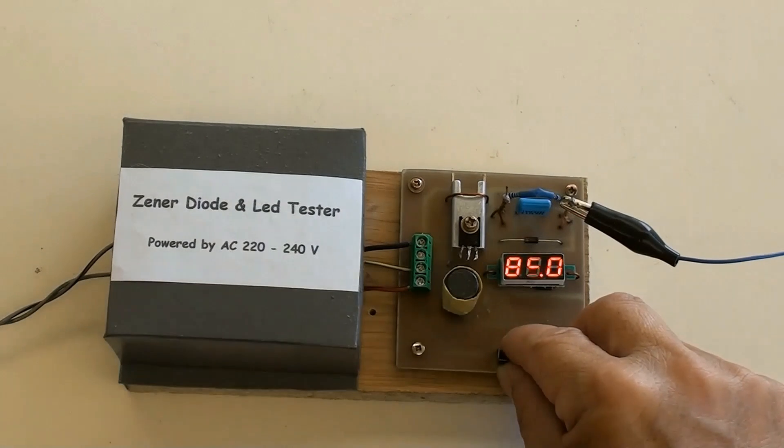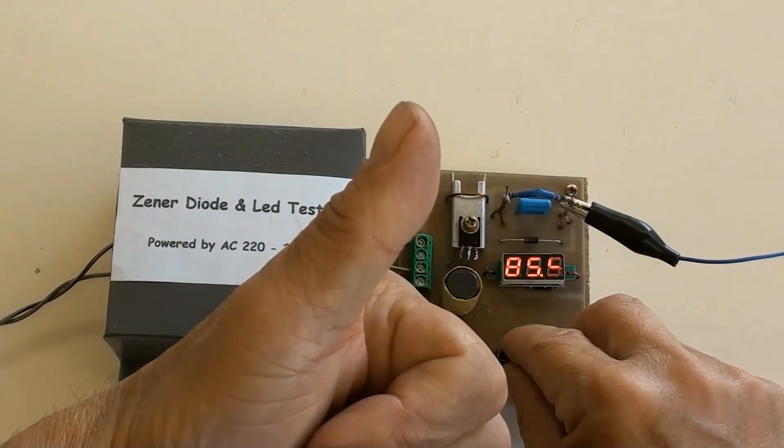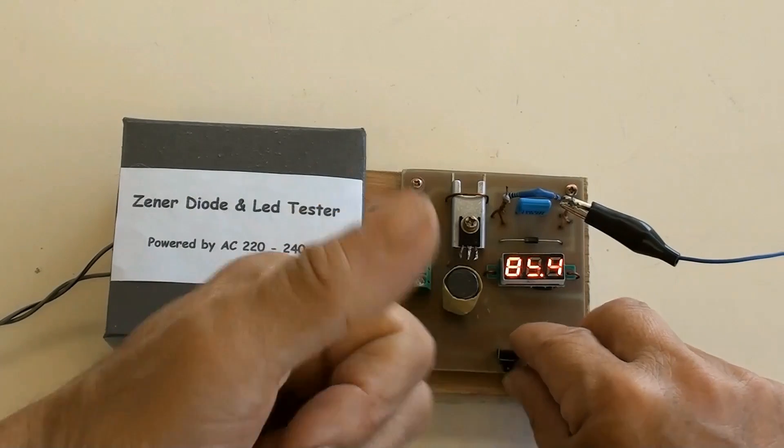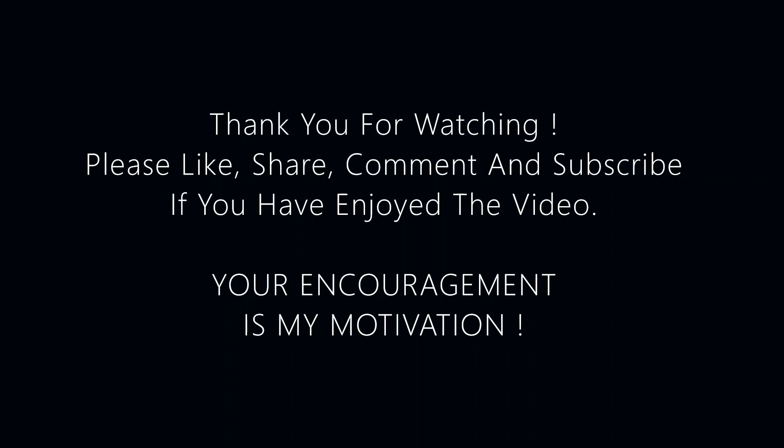That's it. Now you've known how to DIY an easy convenience Zener diode and lead tester by using the recycled parts. Thank you for watching. Please like, share, comment and subscribe if you've enjoyed the video. Your encouragement is my motivation.